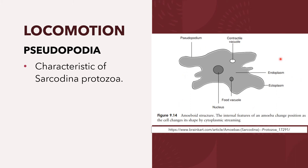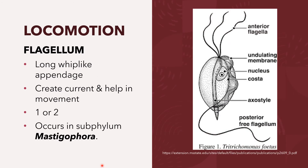A diagram shows the amoeboid structure with the presence of pseudopodia. Protozoa may also move via flagellum or flagella, defined as a long whip-like appendage whose main function is to create current and aid movement. The flagellum is composed of a central axial filament, the axoneme, surrounded by a contractile cytoplasmic sheet. There may be one or more flagella, and in some forms the flagella may be attached to the body by an undulating membrane.